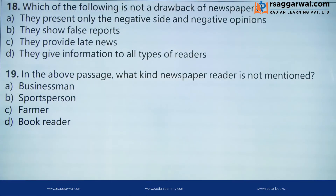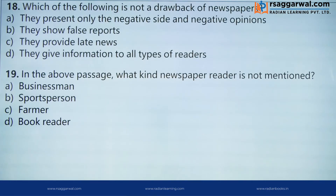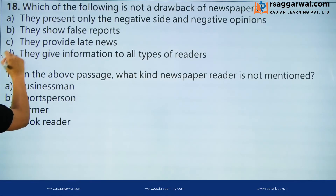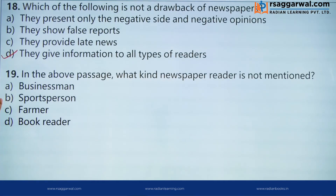Question 3: Which of the following is not a drawback of newspapers? In mein se kaun sa newspaper ka downside nahin hai. Options are: A — They present only the negative side and negative opinions. B — They show false reports. C — They provide late news. D — They give information to all types of readers. D is the correct answer. Kyunki newspapers har type ke readers ko information provide karte hain — that is not a drawback, that is an advantage of newspapers.